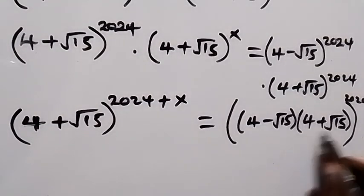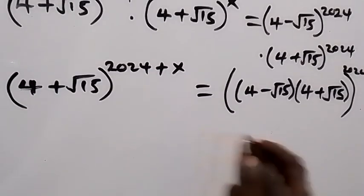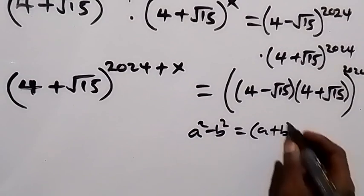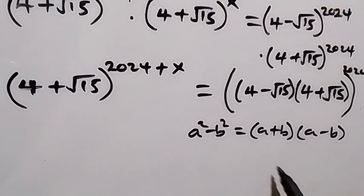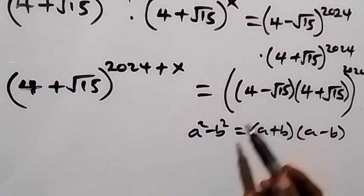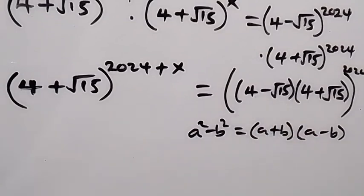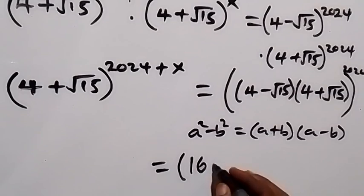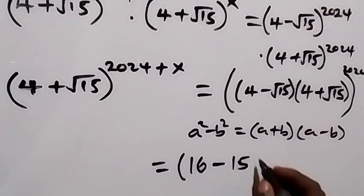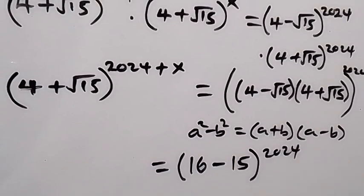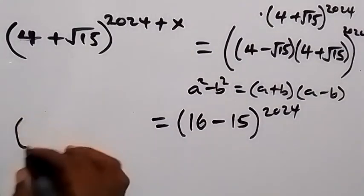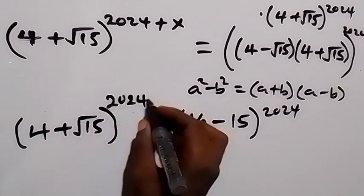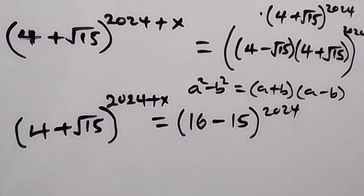From what we have here, we have conjugates, so we can use the difference of two squares: a squared minus b squared equals a plus b times a minus b. So the right-hand side becomes 4 squared minus root 15 squared, raised to power 2024. That is 16 minus 15, all raised to power 2024. So we have 4 plus root 15 raised to power 2024 plus x, equals 16 minus 15 raised to power 2024.